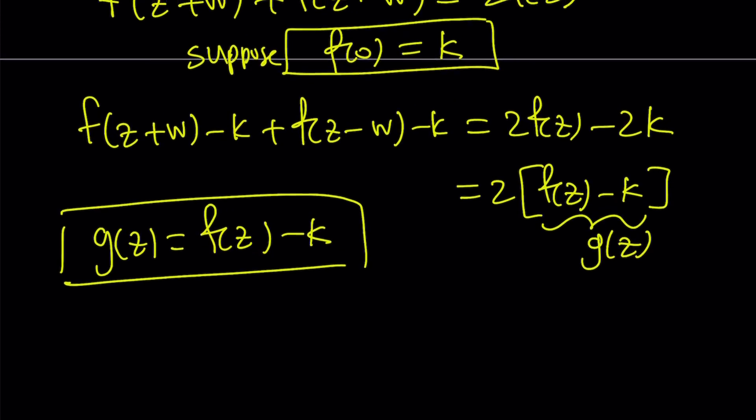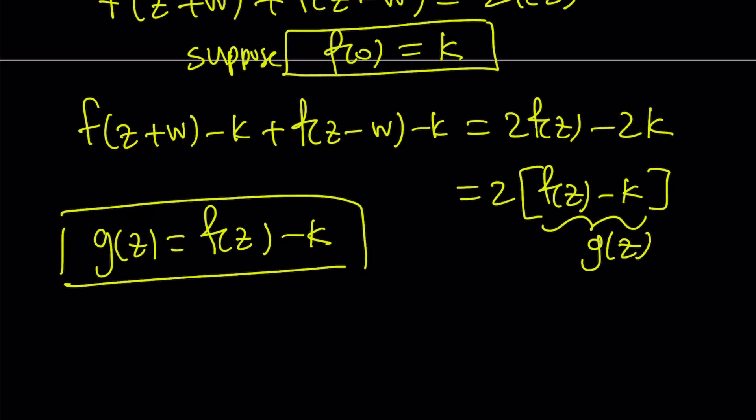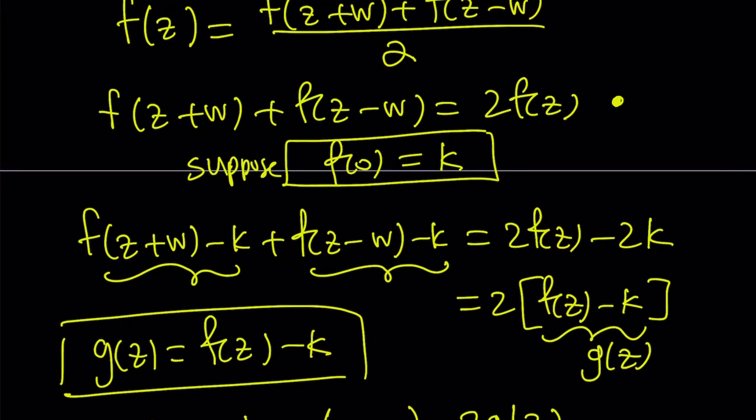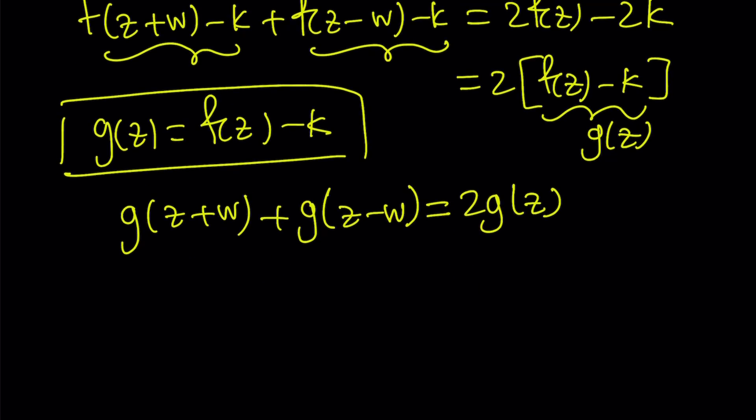Now with that definition, notice that the expressions on the left hand side become g(z+w) and g(z-w). That's the beauty of this substitution. The right hand side is just going to be 2g(z). So we got a similar expression to what we have here, but with g. And g is super important because g(0) is... let's go ahead and find out what it is.